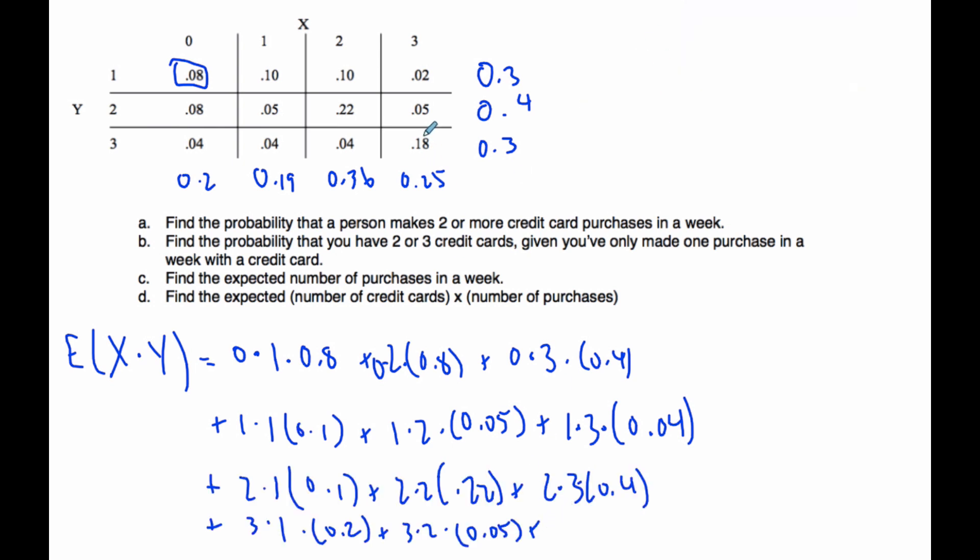Finally, this last column will be 3 times 3 times 18%, 3 times 3 times 0.18. I crunch that all out and I end up with 3.62. This kind of works like a two-way table with probabilities with different outcomes for our different random variables, and we can do expectations with this as well.